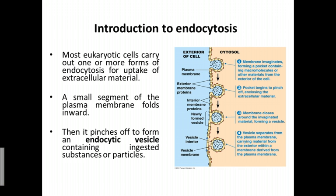For endocytosis, most eukaryotes carry one or more forms of endocytosis for the uptake of extracellular materials. The process of endocytosis is quite interesting. Firstly, the plasma membrane will invaginate, forming a pocket. This pocket will begin to pinch off, closing around the area of extracellular space. This membrane will seal, forming a vesicle. Lastly, this vesicle will be separated from the plasma membrane — this is how you get the endocytic vesicle containing ingested substances or particles.